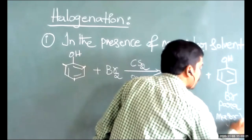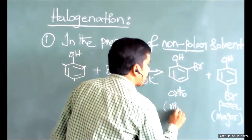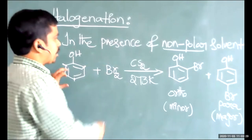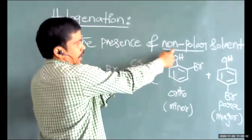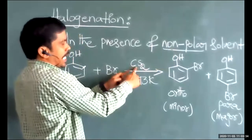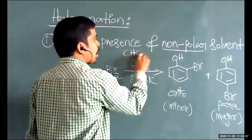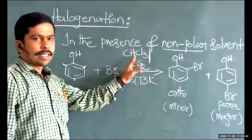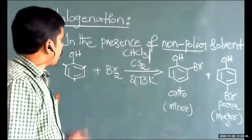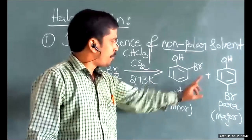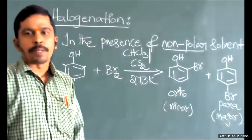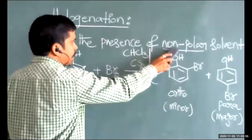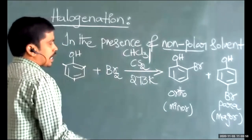The para product is always the major product; the ortho product is the minor product. Whenever phenol reacts with a halogen in the presence of a non-polar solvent like CS2, or a less polar solvent like chloroform (CHCl3), we get a mixture of ortho and para products, with the para product as the major product, at low temperature.